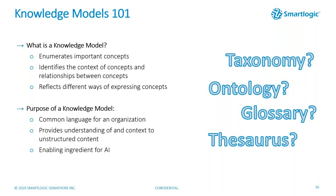The purpose of the knowledge model is to provide a common language for an organization — agreed-upon concepts to provide answers for — and to provide understanding and context to unstructured content. This is a critical enabling ingredient of AI. Even the phrase 'AI' needs to be reflected as 'artificial intelligence' in the knowledge model. What enables those great AI experiences is fundamentally a knowledge model — not magic intelligence underneath.